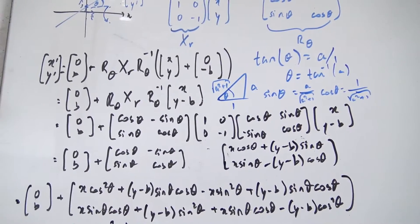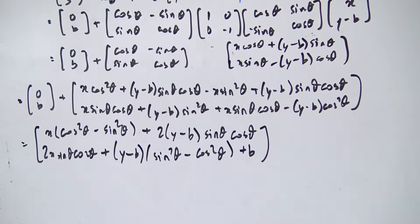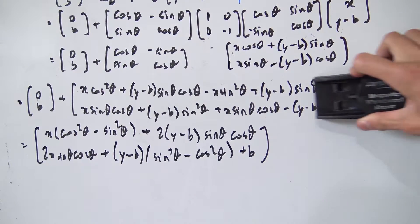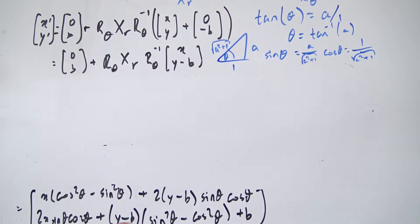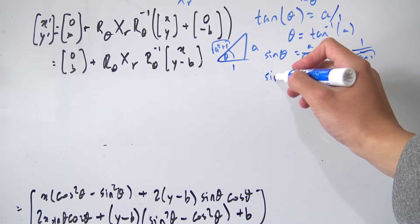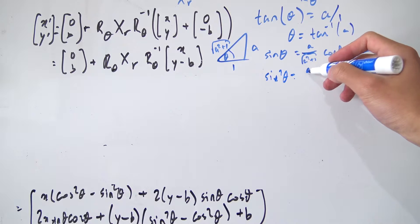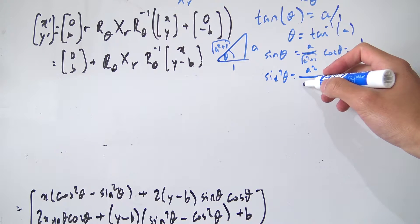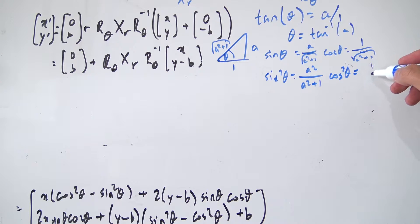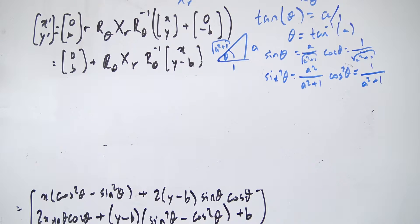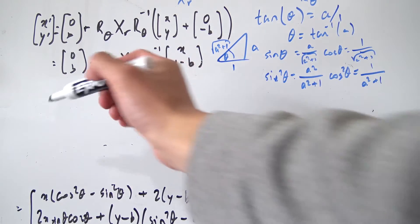Now we can rewrite the expression. Let's compute the squares: sine squared theta equals a squared over (a squared plus 1), and cosine squared theta equals 1 over (a squared plus 1). So cos²theta minus sin²theta equals (1 - a²)/(1 + a²), and sine theta cosine theta equals a over (a² + 1). Now we have all the pieces and can substitute in.